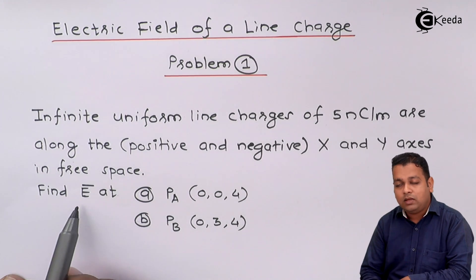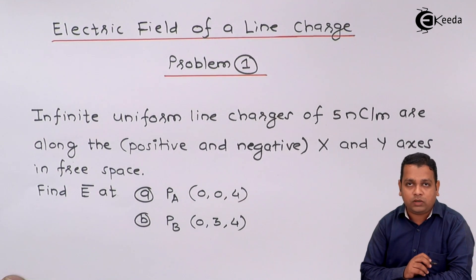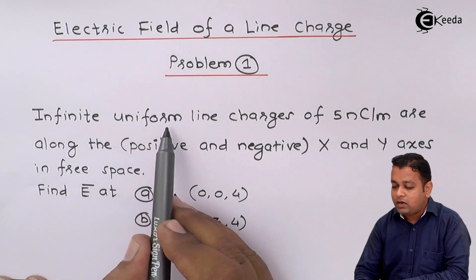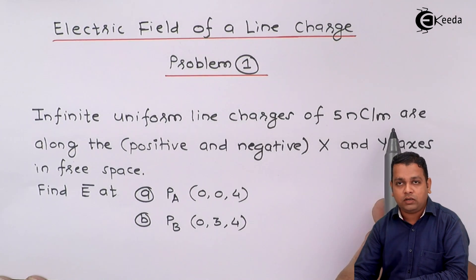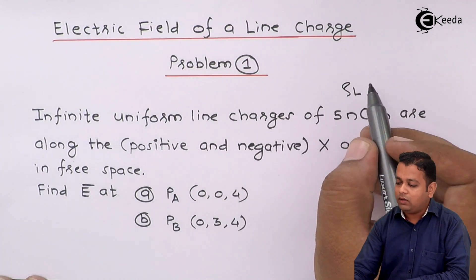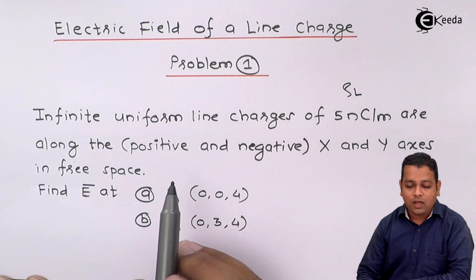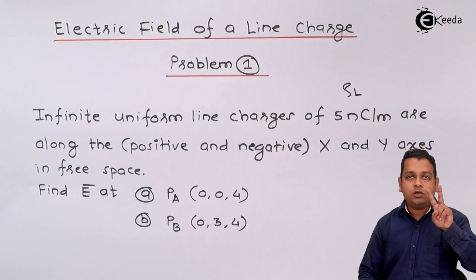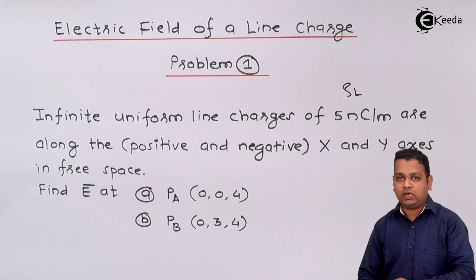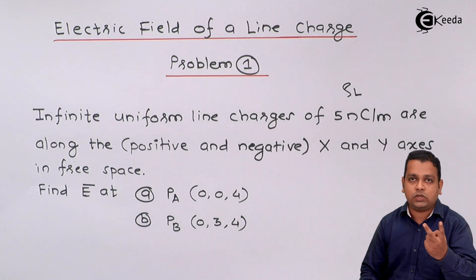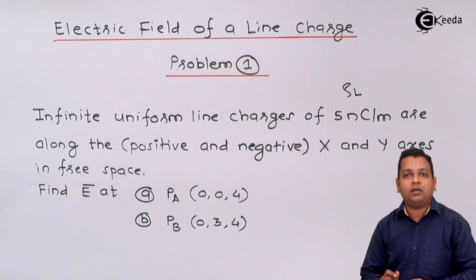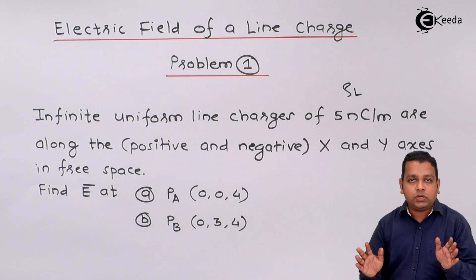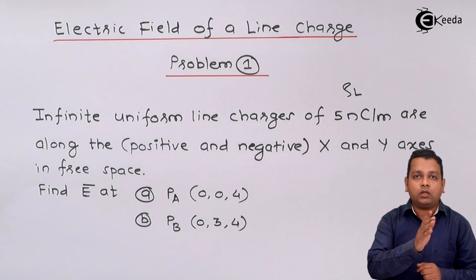In this problem we are asked to find electric field intensity, so we can use that particular formula. There are two infinite uniform line charges of 5 nanocoulomb per meter along the positive and negative x and y-axis. There are a total of two line charges, and because of these two sources we have to calculate electric field intensity at point PA and point PB. First, we will draw the diagram.